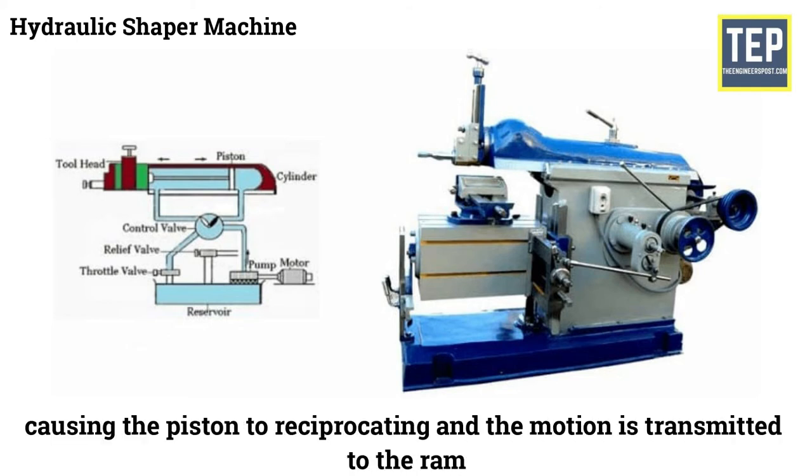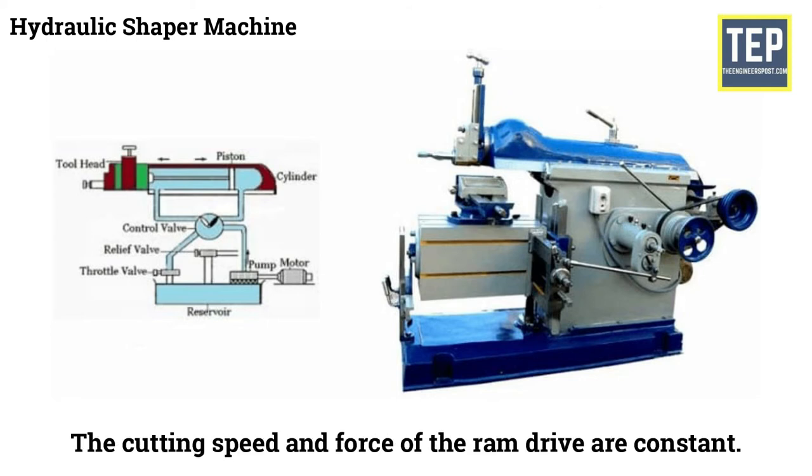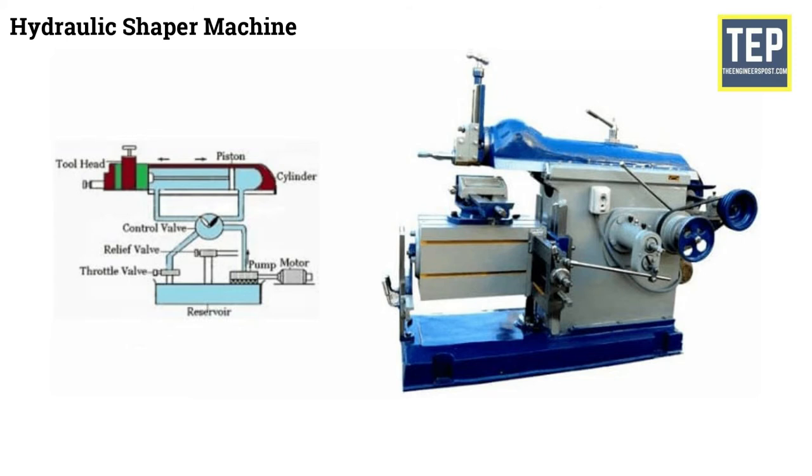Causing the piston to reciprocate and the motion is transmitted to the RAM. The main advantages of this type of Shaper Machine are that the cutting speed and force of the RAM drive are constant from start to end of the cutting operation. It is done without making noise and operates very quietly.